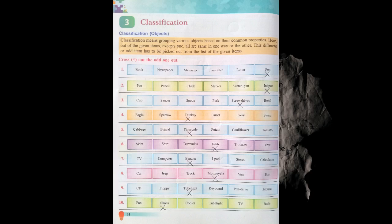Ink pot is the odd one. Now: cup, saucer, spoon, pot, screwdriver and bowl. Screwdriver is the only option which is not a kitchen appliance, so it is the odd one. Now: eagle, sparrow, donkey, parrot, crow and so on. Here donkey is an animal — all the rest are birds — so donkey is the odd one.